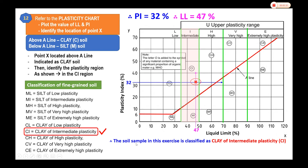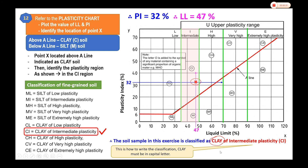Finally, the soil sample in this exercise is classified as clay of intermediate plasticity. The word 'clay' must be written with a capital C to indicate that clay is the main or dominant particle size in this soil sample, followed by the plasticity behavior descriptor. This is how we classify fine-grained soil.